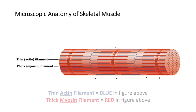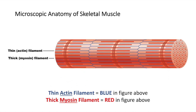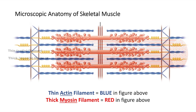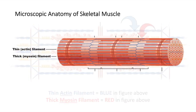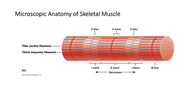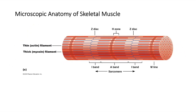The myofilaments are composed largely of two varieties of contractile proteins, actin and myosin, which slide past each other during muscle activity to bring about the shortening or contraction of the muscle cells. The actual contractile units of muscle, called sarcomeres, extend from the middle of one I-band to the middle of the next along the length of the myofibrils.